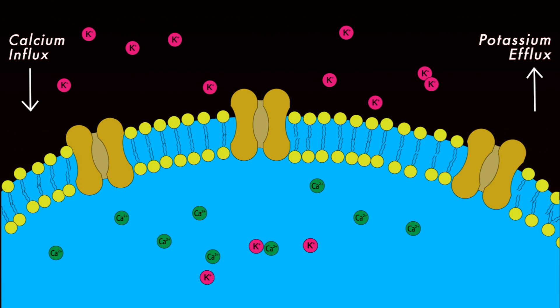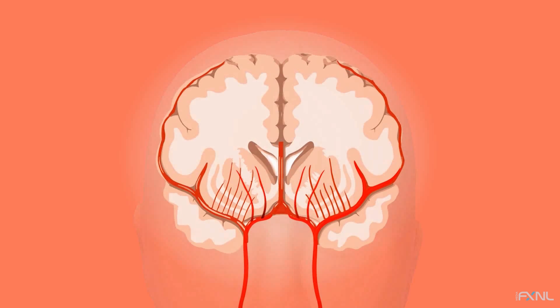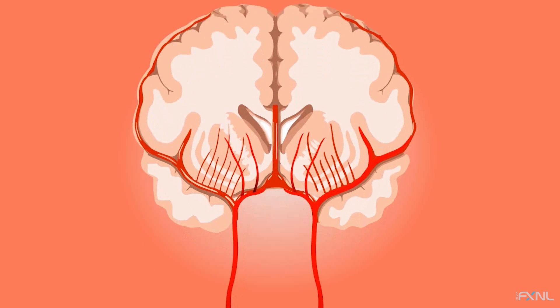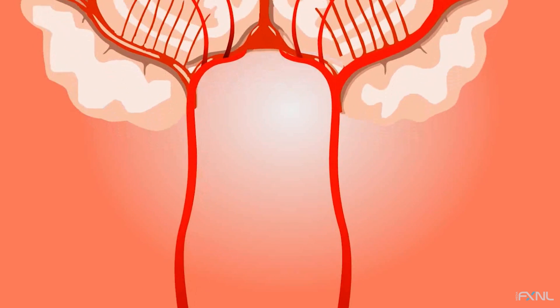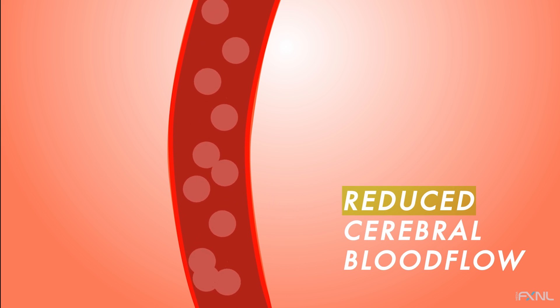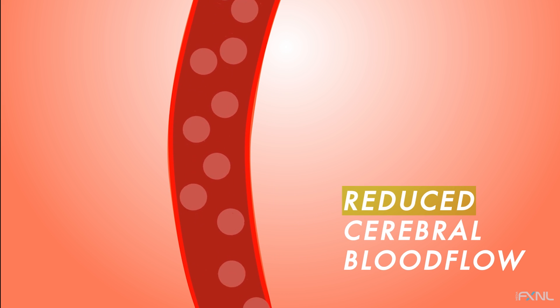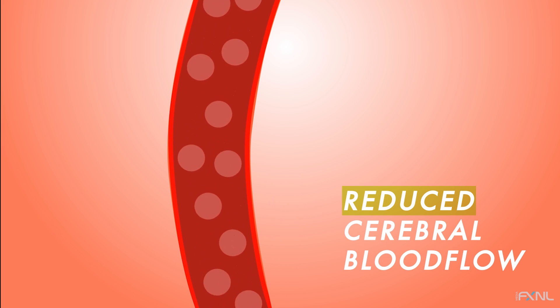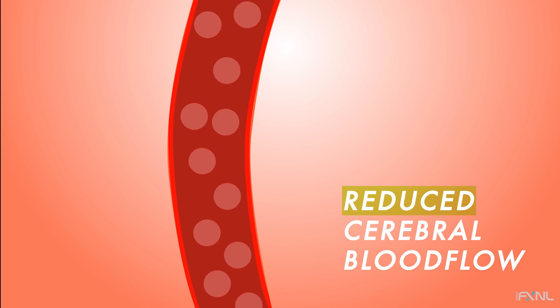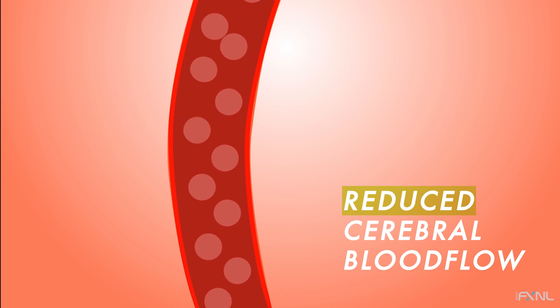Secondly, there is a decrease in the blood flow to the brain. However, blood flow is vital to transport the much needed glucose to the injured cells. This results in an energy crisis, where the body needs more glucose but reduced cerebral blood flow prevents its delivery.